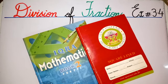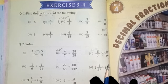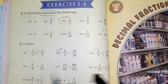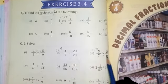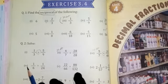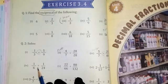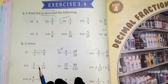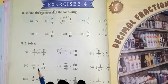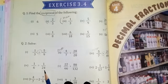Page number is 102 and exercise 3.4. Okay students, I have opened the book. Question number 2, solve. First 3 parts have been completed. Now come to the part number 4. Part number 4 is 1 by 6 divided by 1 by 24.